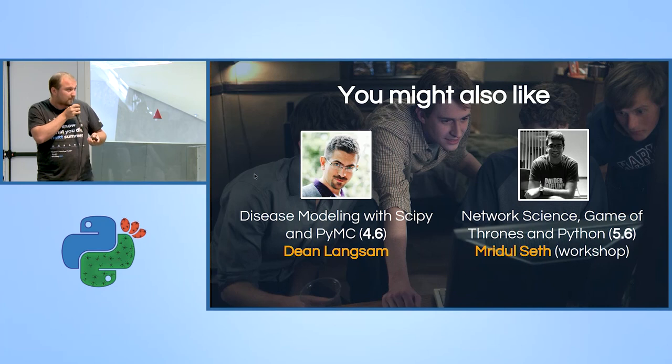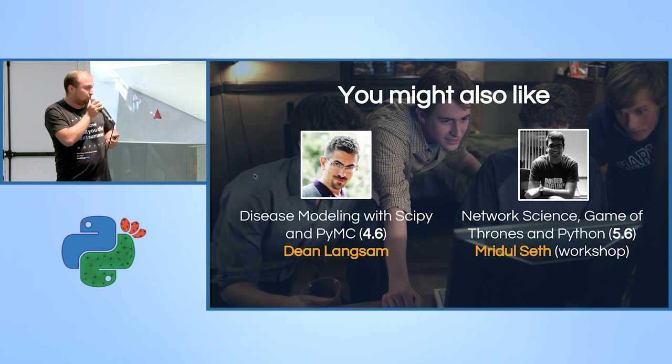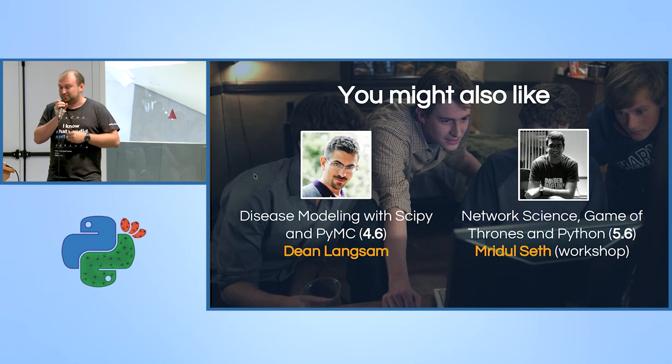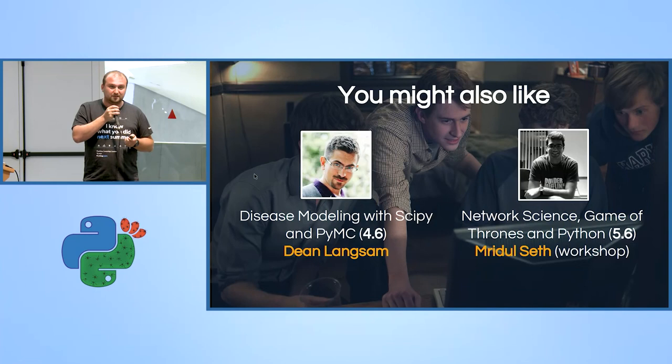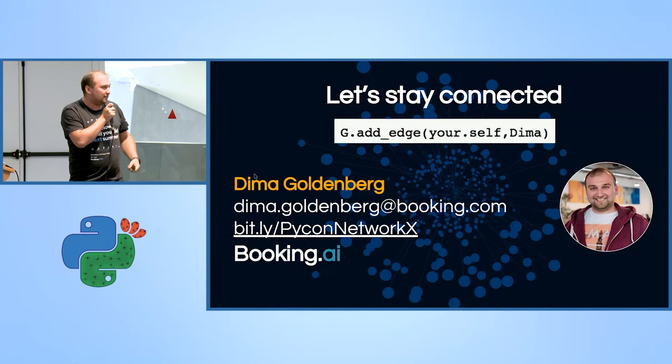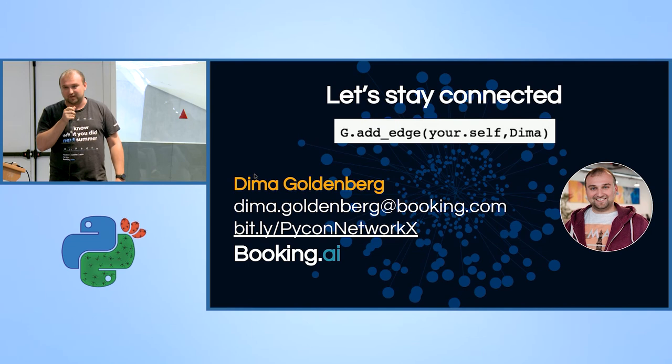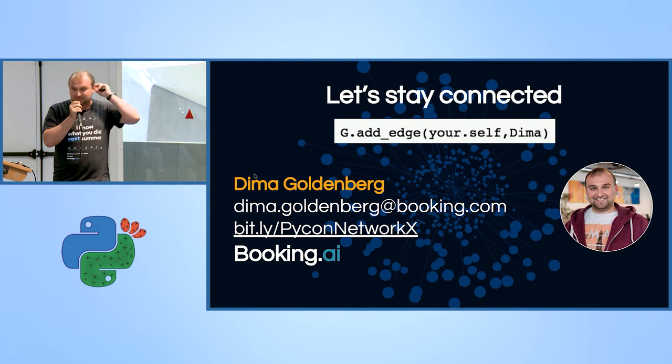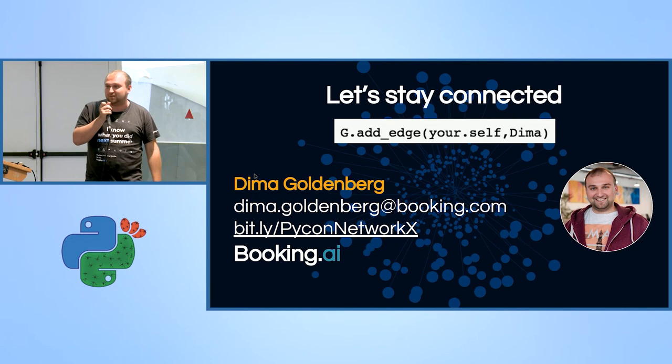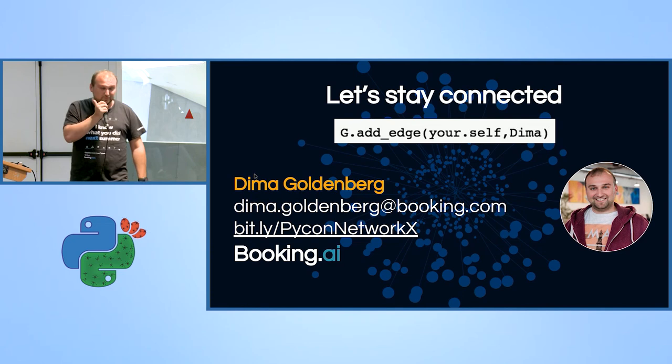So if you like this talk, you might also like, because they are kind of connected, these two talks. Dean is going to talk about virality and disease modeling tomorrow, and Brindul is going to give a workshop about actually working with NetworkX. So if you're interested, you can get a deep dive into that. It's basically based on the recommendation system of network connections. And let's stay connected. You can reach out for more information. You can definitely check the code examples that I used to create this graph. This bit.ly is actually going to GitLab. And you can check out Booking AI blog to see about any machine learning work that we do, or just reach out to me if you're interested in working at Booking or any research that we do. So thank you. And I'll take questions.